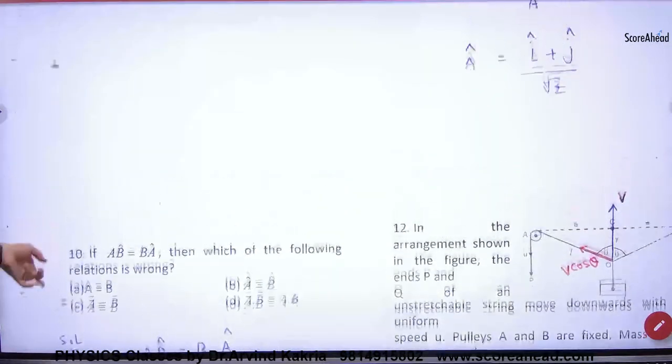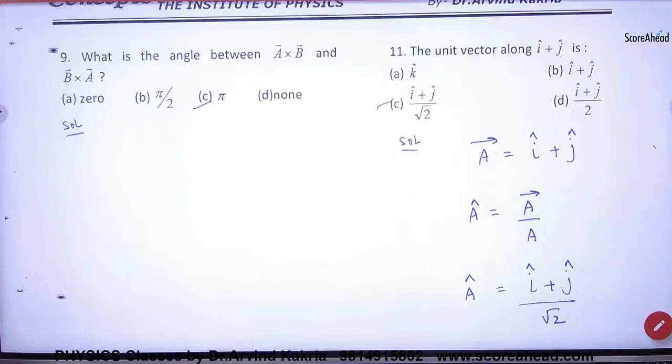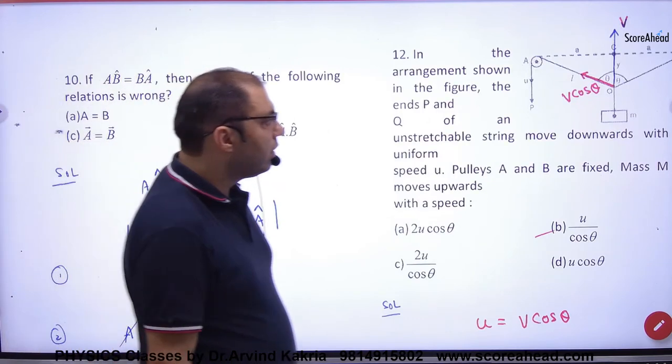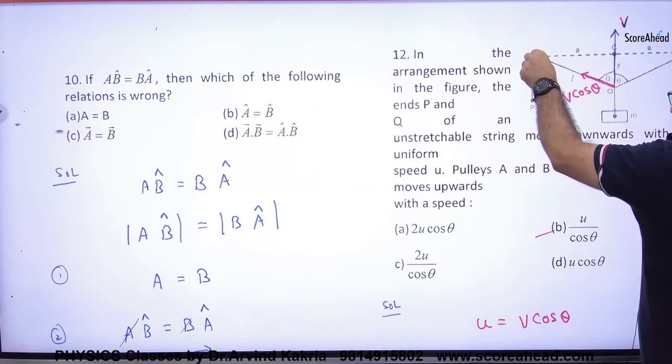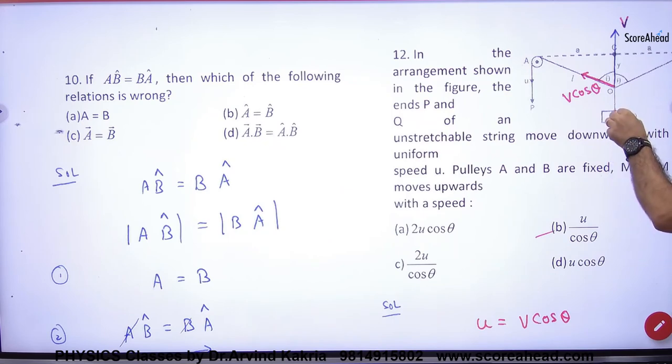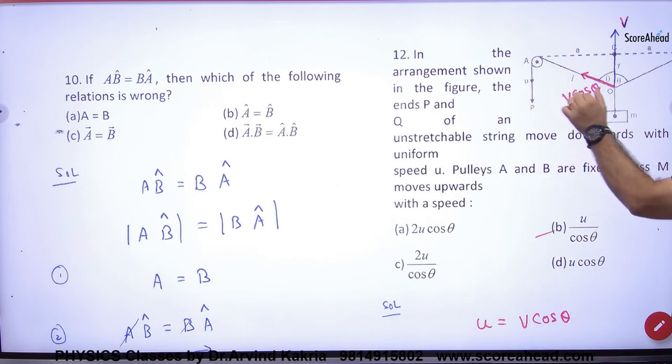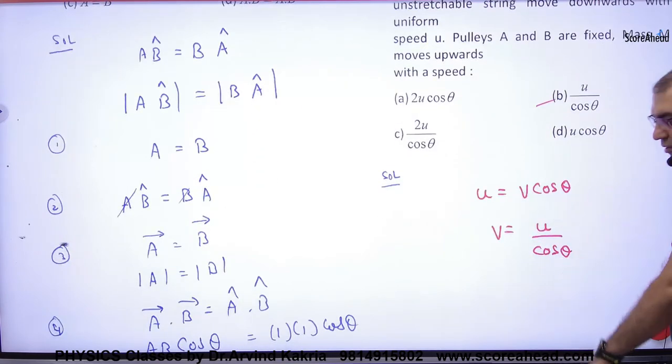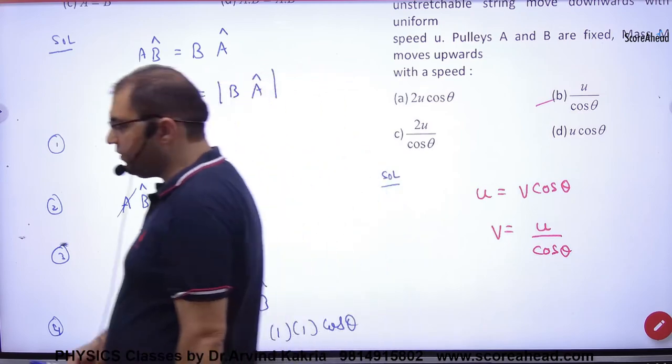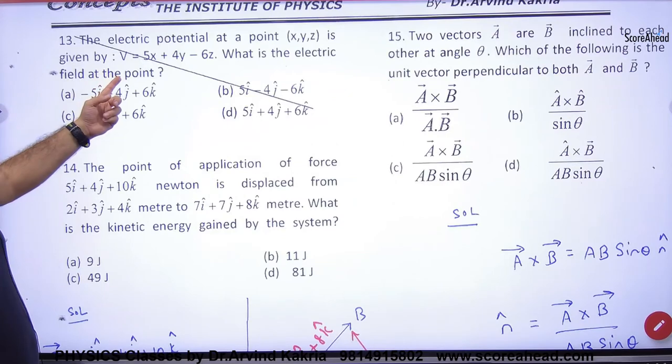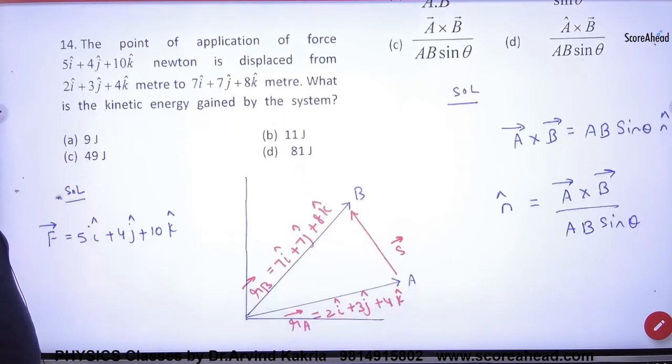Question number 10, question number 11, question number 12. Twelve, we have done last time. This is a pulley, this is pulling the string with u velocity, and this block is going up with velocity v. So velocity v has two components: v cos theta. I told you that the velocity along the string is the same, so u and v cos theta are exactly the same. So here v can be calculated. Don't do 13 plus 2 cross this.